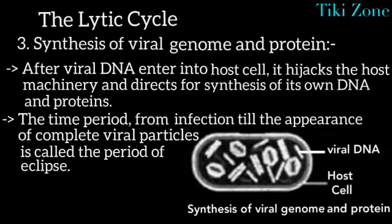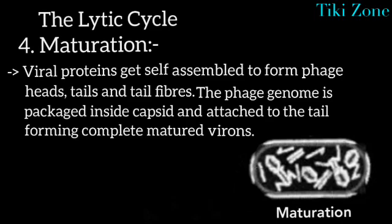The third step of the lytic cycle is synthesis of the viral genome and proteins. After viral DNA enters the host cell, it hijacks the host machinery and directs the synthesis of its own DNA and proteins. The time period from infection until the appearance of complete viral particles is called the period of eclipse.